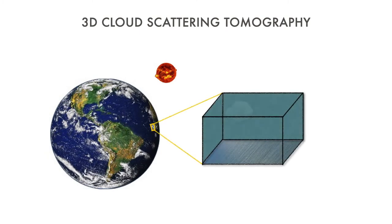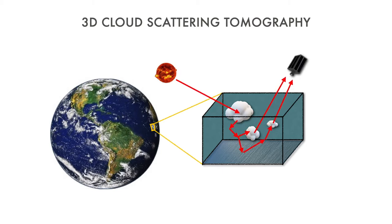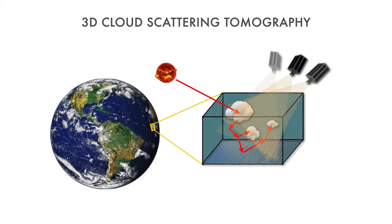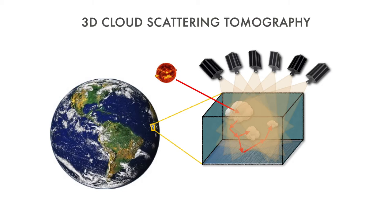The atmosphere, including clouds of course, is a three-dimensional, heterogeneous, highly scattering medium. Sunlight scatters multiple times in it and can be measured. To address important scientific questions, there is a need to retrieve the 3D cloud microphysics. This leads to a new type of CT: cloud scattering tomography.